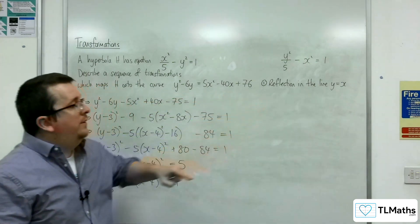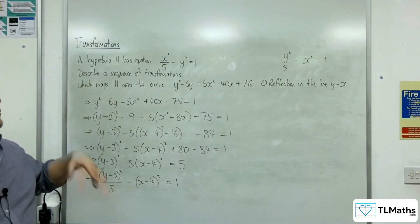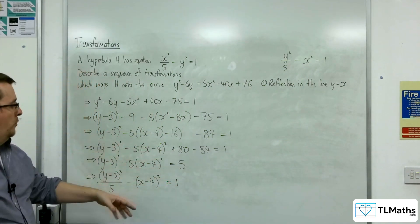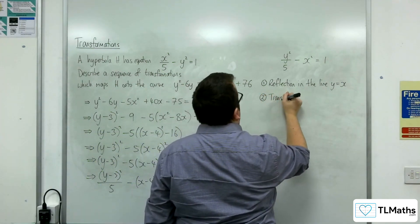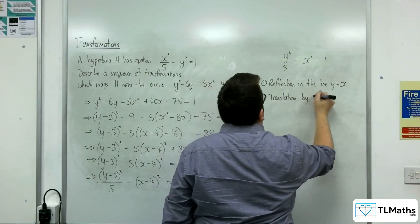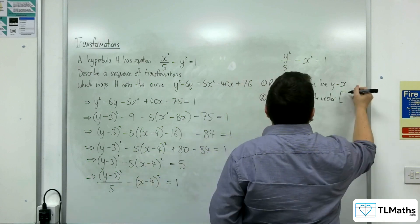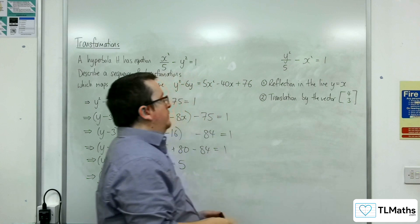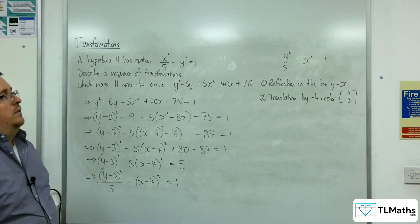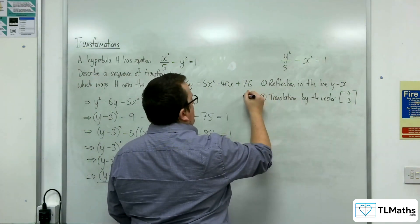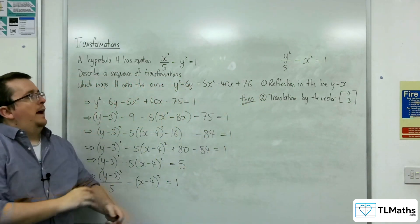If we've done that first, then the x is being replaced with x minus 4, which gets us the vector 4 and 3. So followed by a translation by the vector 4, 3. And so as I said, there may well be, so I'll just put reflection then, to make sure it's clear on the order of transformations here that I've used.